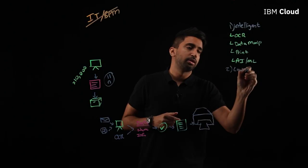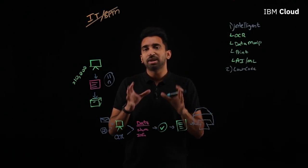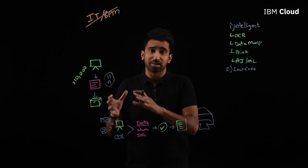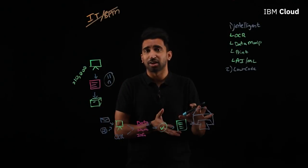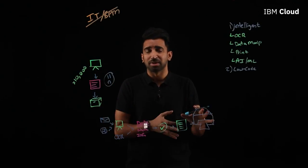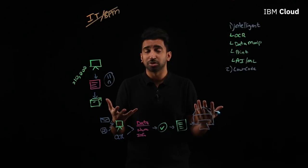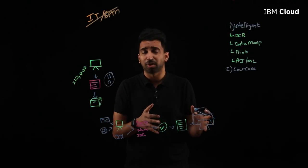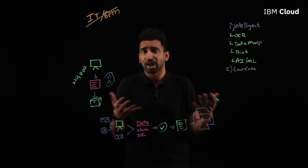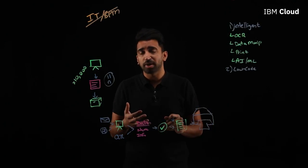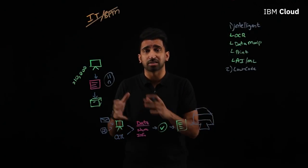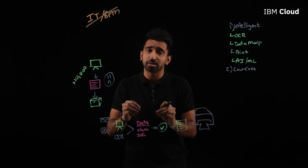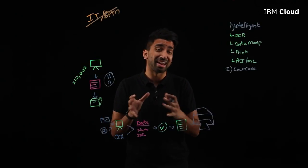Number two: low-code. RPA is really only going to be effective if the users creating this automation find the process to be easy. Otherwise, management might choose to just have employees do it manually if creating the automation was too time-consuming. A low-code RPA environment enables Pete to do things like drag-and-drop components and have minimal effort to actually get this automation created end-to-end.